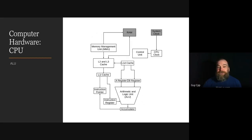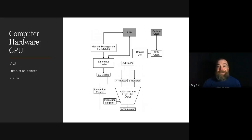The ALU also performs operations to jump to different places in memory for retrieving the next instruction, and that result ends up in the instruction pointer, which specifies where to get the next instruction from. The CPU never actually accesses RAM — RAM is fed to the cache by the memory management unit, and the CPU operates on data in the cache. Caches further from the ALU predict what data or instructions might be needed next, moving them into L1 cache when needed.